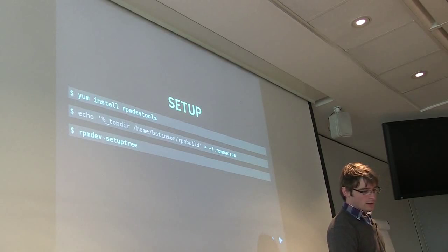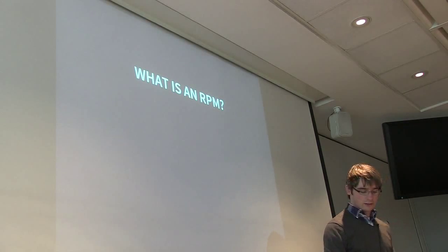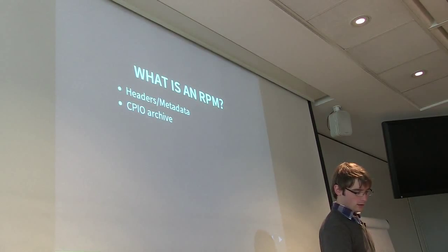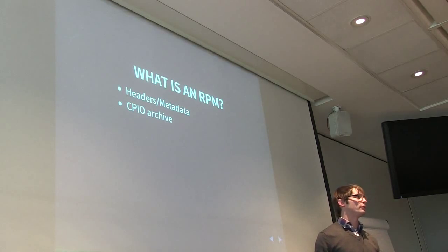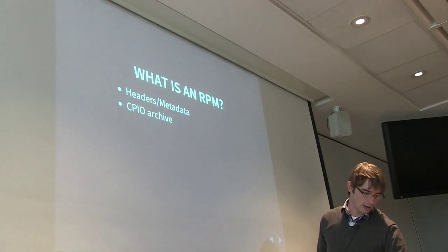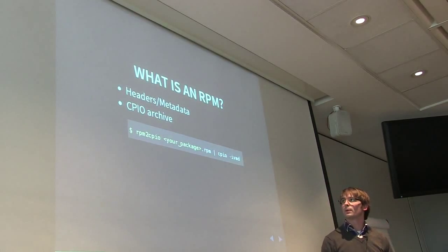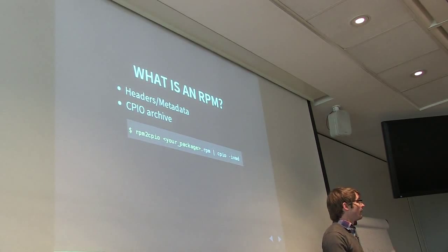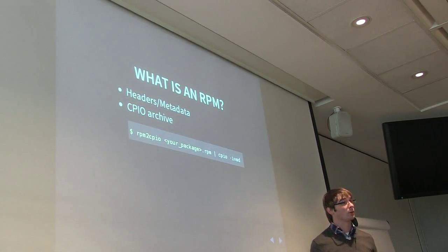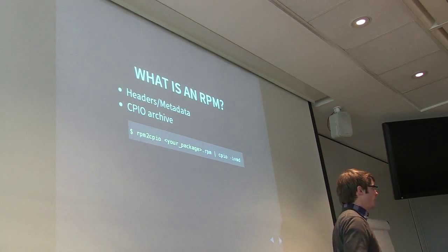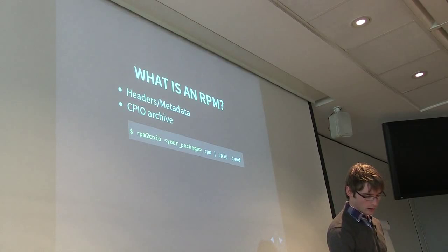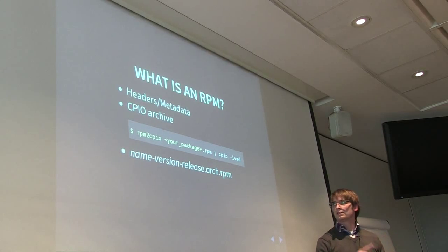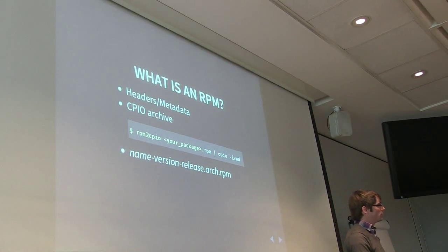To give you a 10,000 foot overview of what is an RPM: it's a section of headers and metadata, it's a CPIO archive with all of the files that it's going to put on the file system. You can pipe an RPM to CPIO and that'll extract the RPM into a temporary directory, which is really handy if you're working on things. It's always in the format something like name, version, release, maybe an architecture, dot RPM.